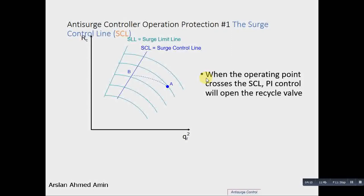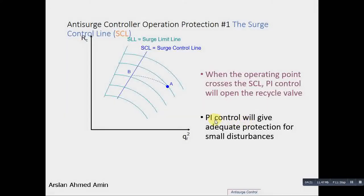So when the operating point crosses the SCL, surge control line, a PI control will open the recycle valve. A PI response, proportional and integral, will give adequate protection for small disturbances. PI control will provide stable control during slow disturbances near the surge location.